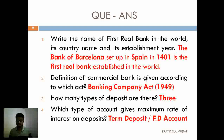I had given a quiz in Part 1, so now here are the answers. Question 1 was: write the name of the first real bank in the world, its country name, and its year of establishment. The answer is the Bank of Barcelona, which was set up in Spain in the year 1401 — it is the world's first real bank.